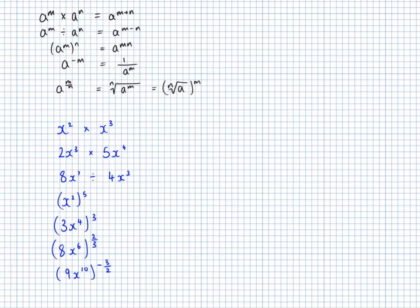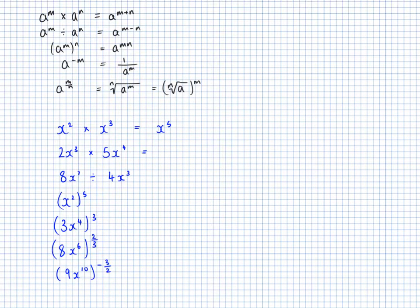Now you also need to be able to simplify expressions like this. The first one gives x to the power of 5. The next one: 2 times 5 is 10, and x cubed times x to the 4 — we add the powers to get x to the 7. So that's 10x to the 7.